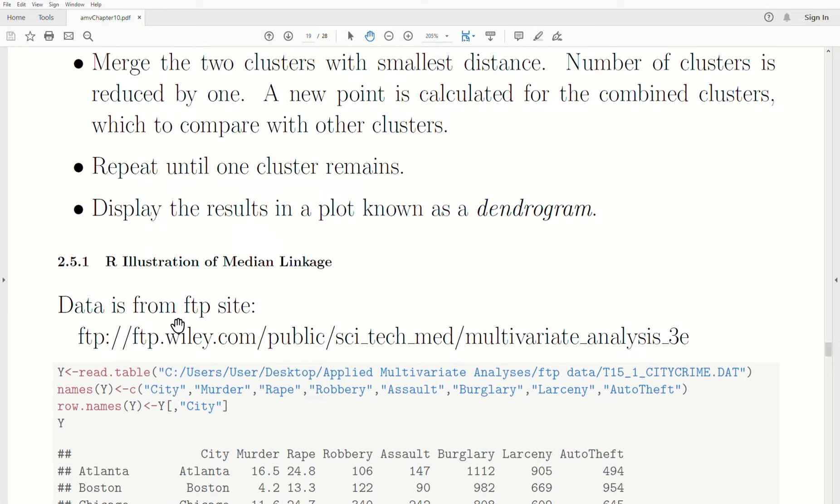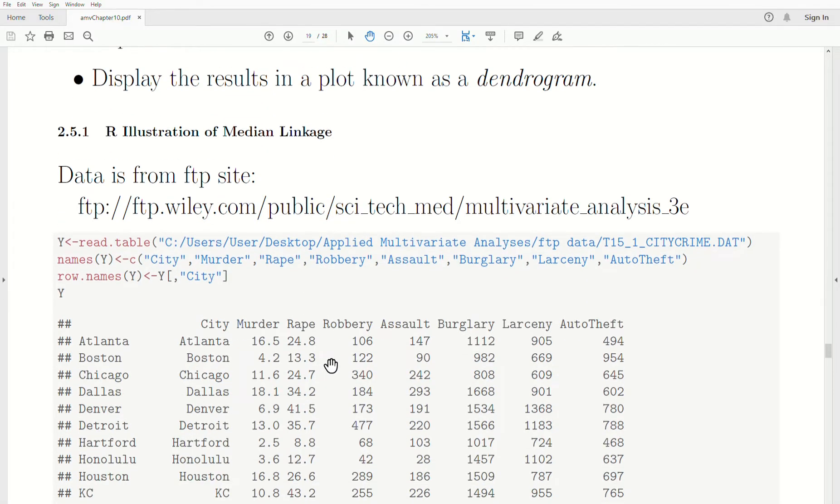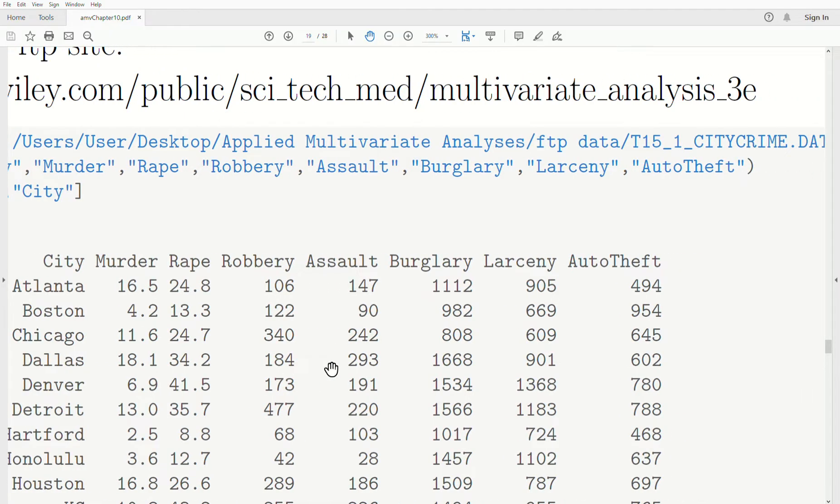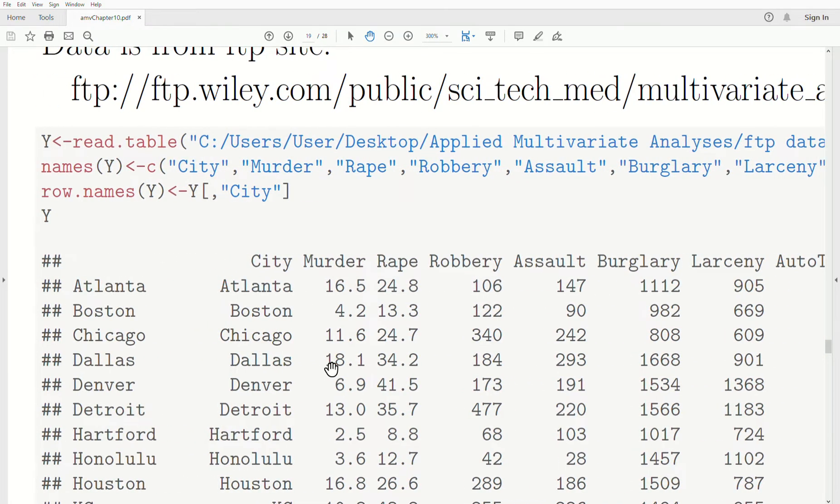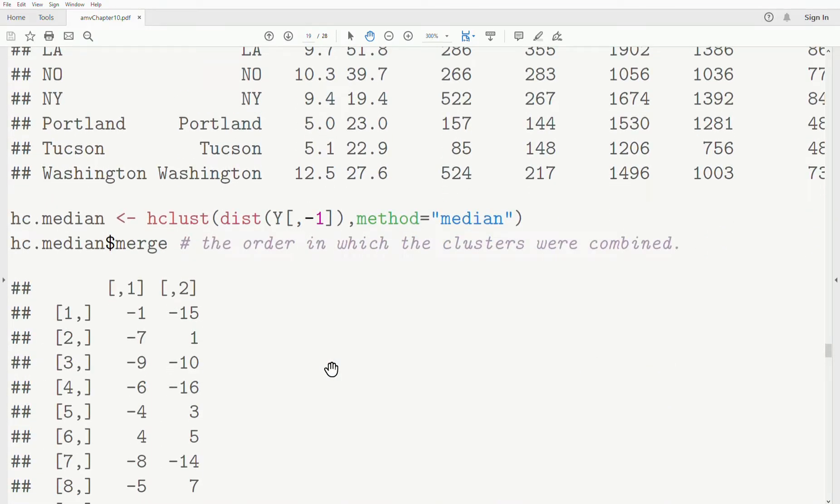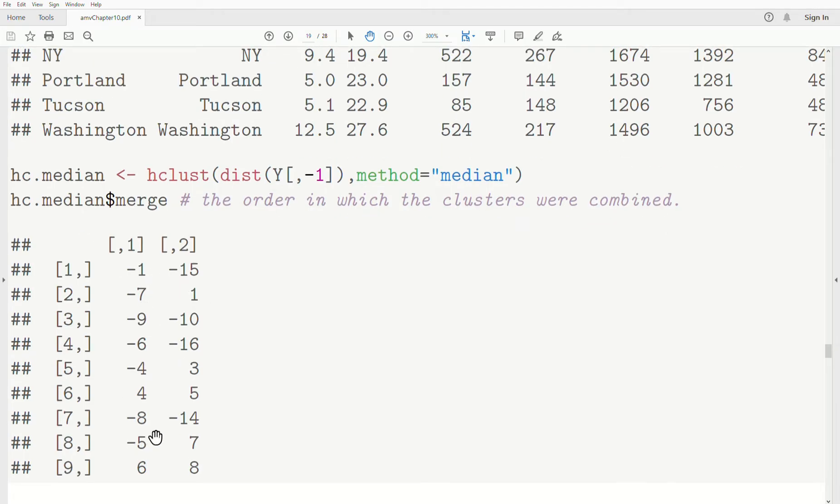Okay, so let's illustrate this from data from an FTP site here. And we'll look at the median linkage. And again, we'll use the city crime data. So we use HClust. And again, that's the workhorse, but we select method median. And we store it in this variable. There's object. And I always like to print out the merge matrix. And that tells us how things were merged.